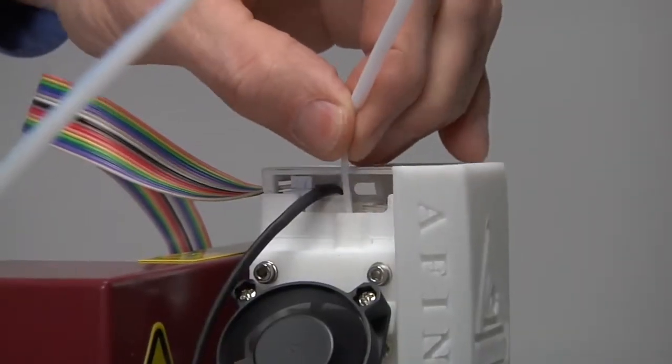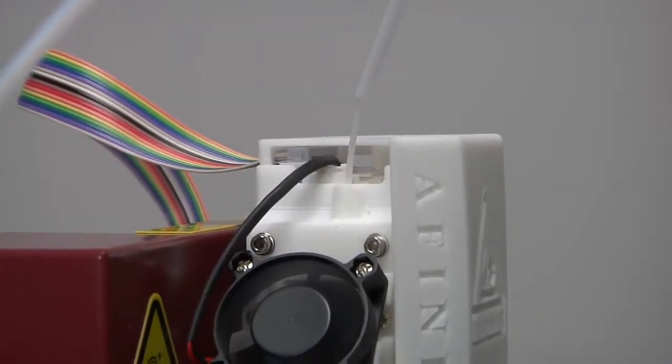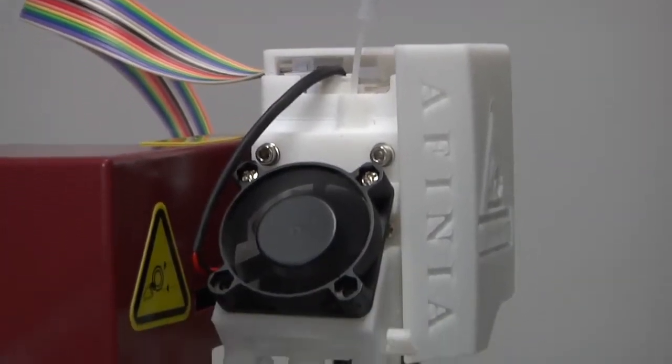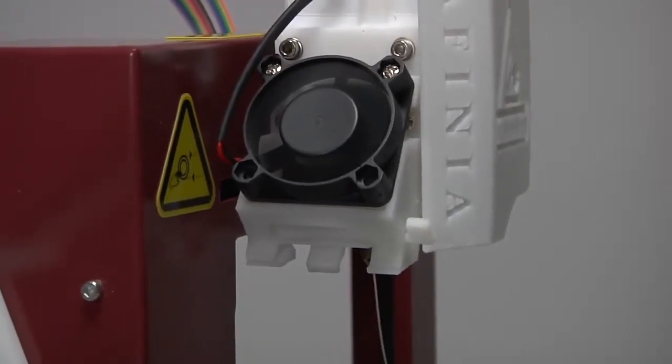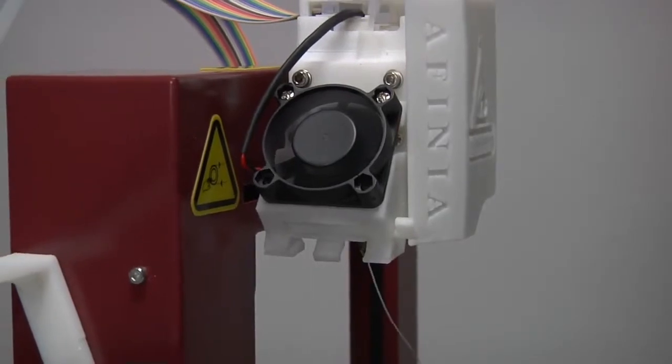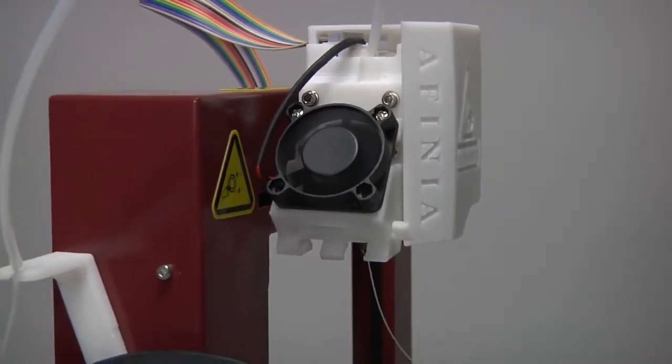Once the nozzle is heated, push the filament a bit farther into the hole at the top of the extruder head and hold it there with gentle pressure until the extruder motor starts pulling it through the extruder head. The extruder will release a thin strand of filament for a short period of time.